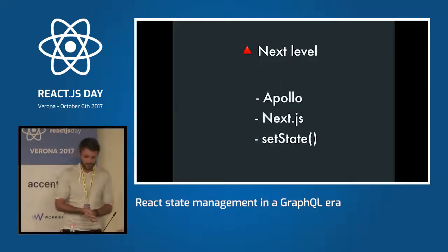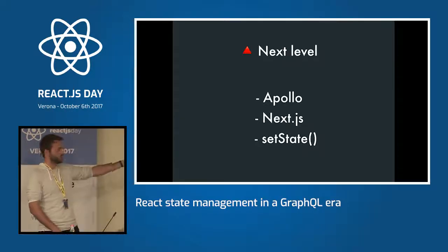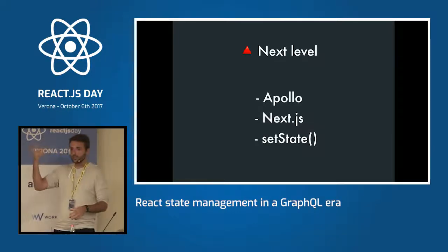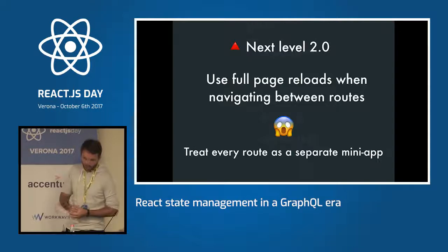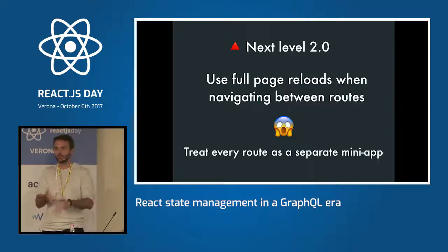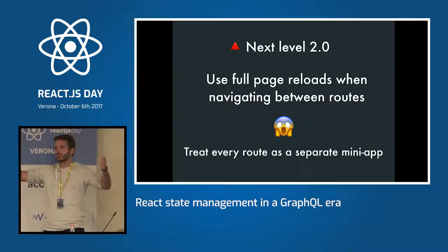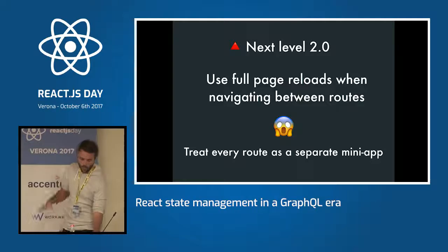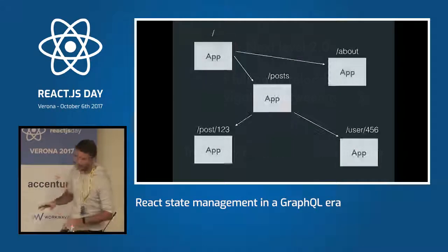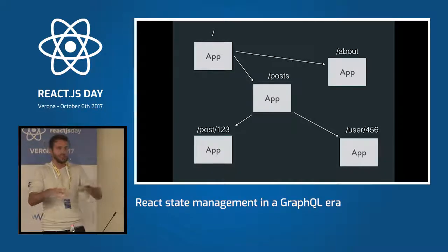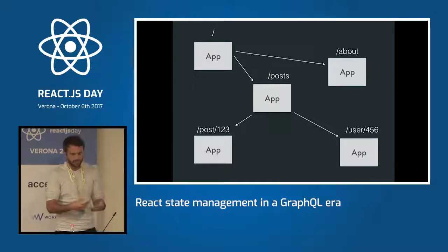The fifth stack is Next Level — because of Next.js. It uses Apollo, Next.js, and setState, and it's server-side rendered. I'll suggest something that sounds crazy: use full-page reloads when navigating between routes. Why would that be bad? Big websites like Amazon often do a full-page refresh going from home to cart and you don't notice because you're too deep in the single-page app mentality. I'm experimenting with treating every route as a separate mini-app. When you navigate between routes, it simplifies state management enormously because it's much easier to reason about.